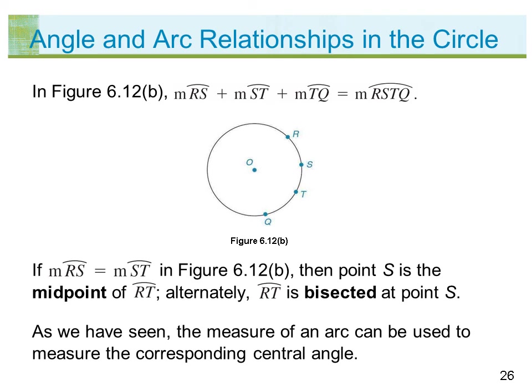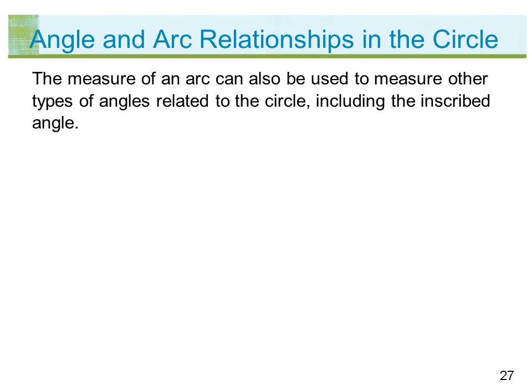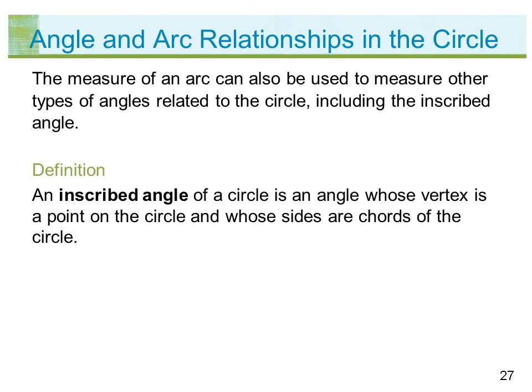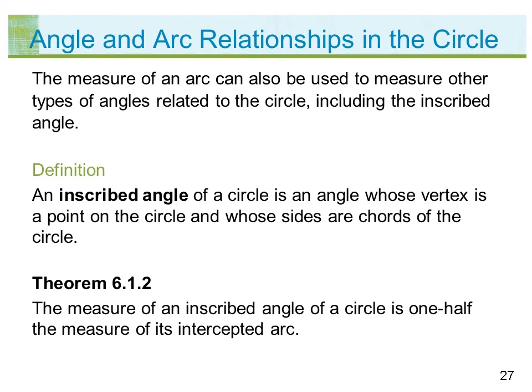The measure of an arc can be used to measure the corresponding central angle, and also to measure other types of angles related to the circle, including the inscribed angle. An inscribed angle of a circle is an angle whose vertex is a point on the circle and whose sides are chords of the circle. Theorem 6.1.2: the measure of an inscribed angle of a circle is one half the measure of its intercepted arc.